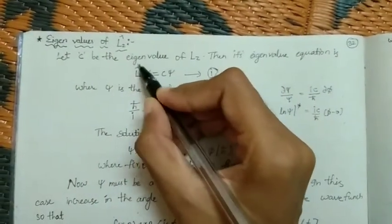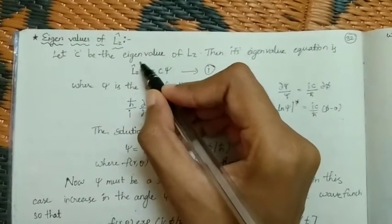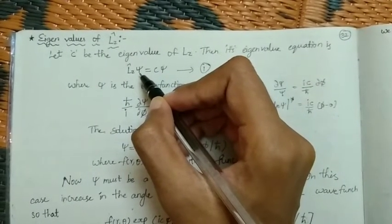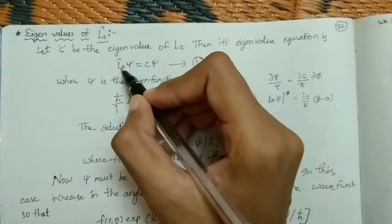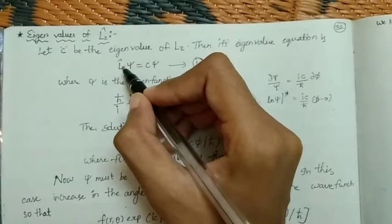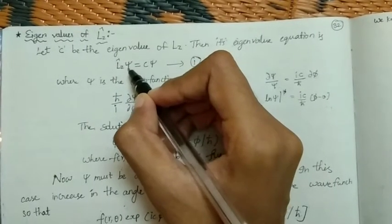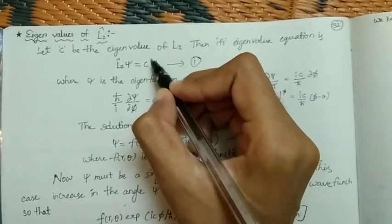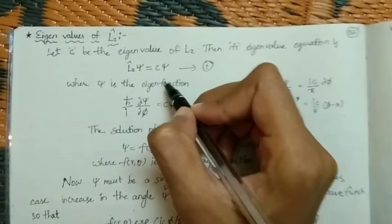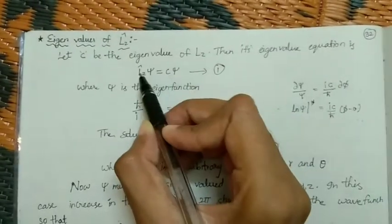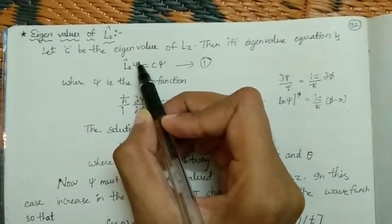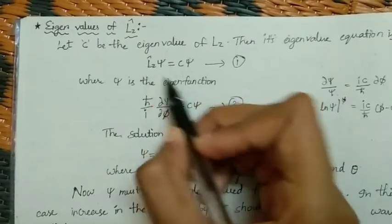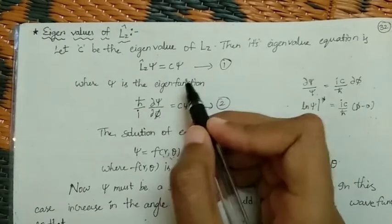This means that if the Lz operator acts on a wave function xi — and in quantum mechanics we use wave functions to describe any state of a particle, object, or atom — the result is the same wave function multiplied by its eigenvalue. This is the eigenvalue equation, where xi is the eigenfunction.